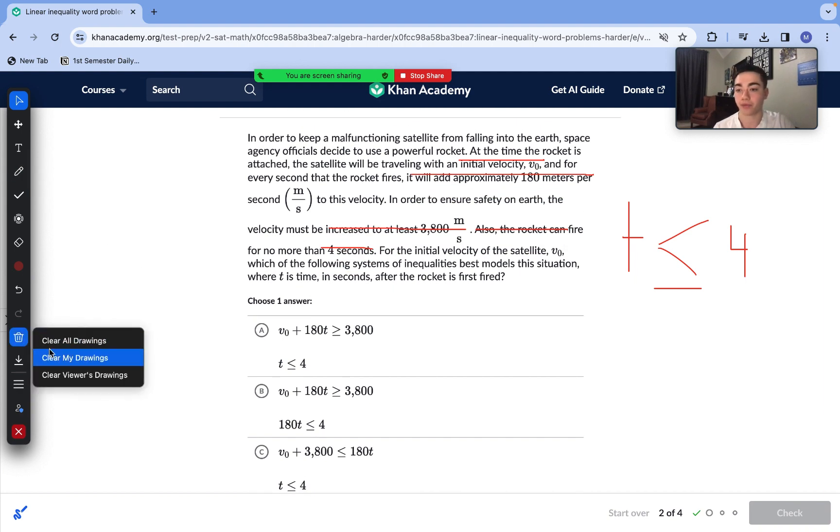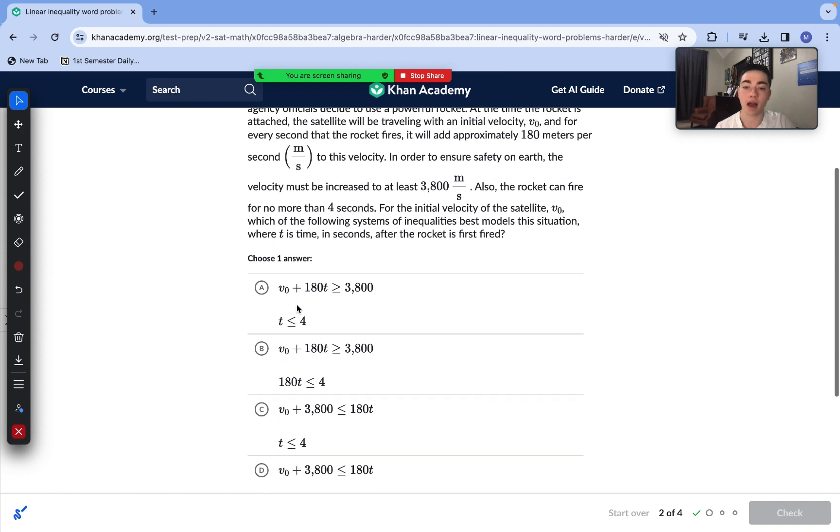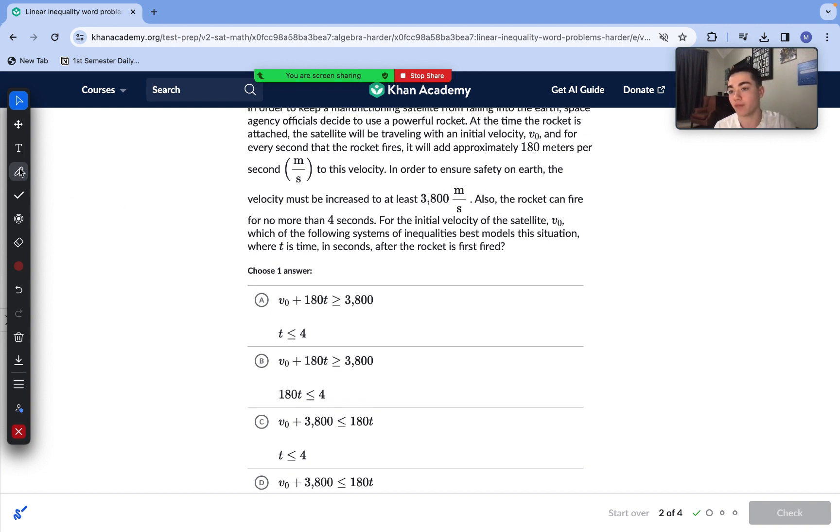Now we need to see that we have our initial velocity that is our y-intercept. In these inequalities we can still have y-intercepts and slopes. We have our initial velocity and then we're going to be adding on our slope which is 180 meters per second, happening every one of these seconds. So that means we need to have our 180T and at least 3800. At least is our greater than or equal to so it must be greater than or equal to 3800. Answer choice A has all of these requirements so it is correct.